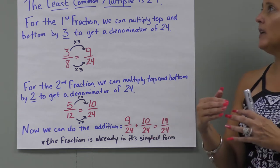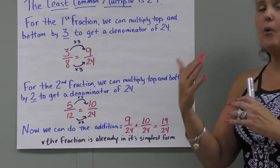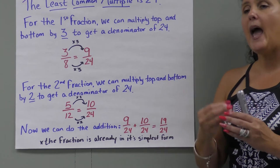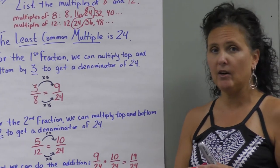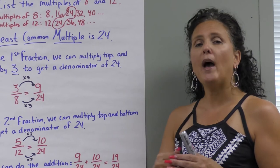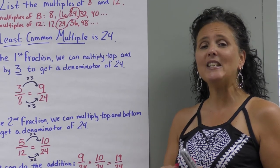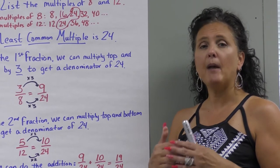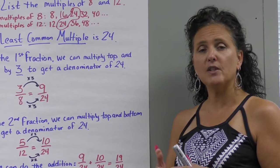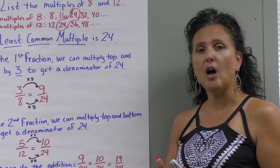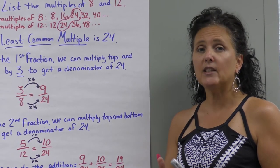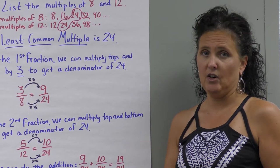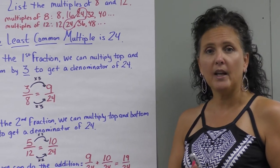So what I wanted you to get from this whole lesson is that if we're adding fractions, they have to have the same denominator. If they do not, you have to find the least common denominator, make both fractions match, and then you can add the top numbers with that least common denominator to get the correct answer. Thank you so much for joining us. Thanks, Ms. Sinisi.